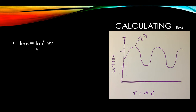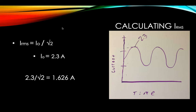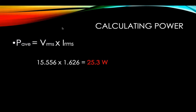Now we're going to find the I_RMS value. We're going to say that our peak current is 2.3 amperes. We take that and plug it into our equation I-naught over the square root of two: 2.3 divided by the square root of two equals 1.626 amperes — that is the I_RMS value. Now we can calculate the average power. We take the V_RMS value of 15.556 volts and multiply it by the I_RMS value of 1.626 amperes, and we get a value of 25.3 watts.